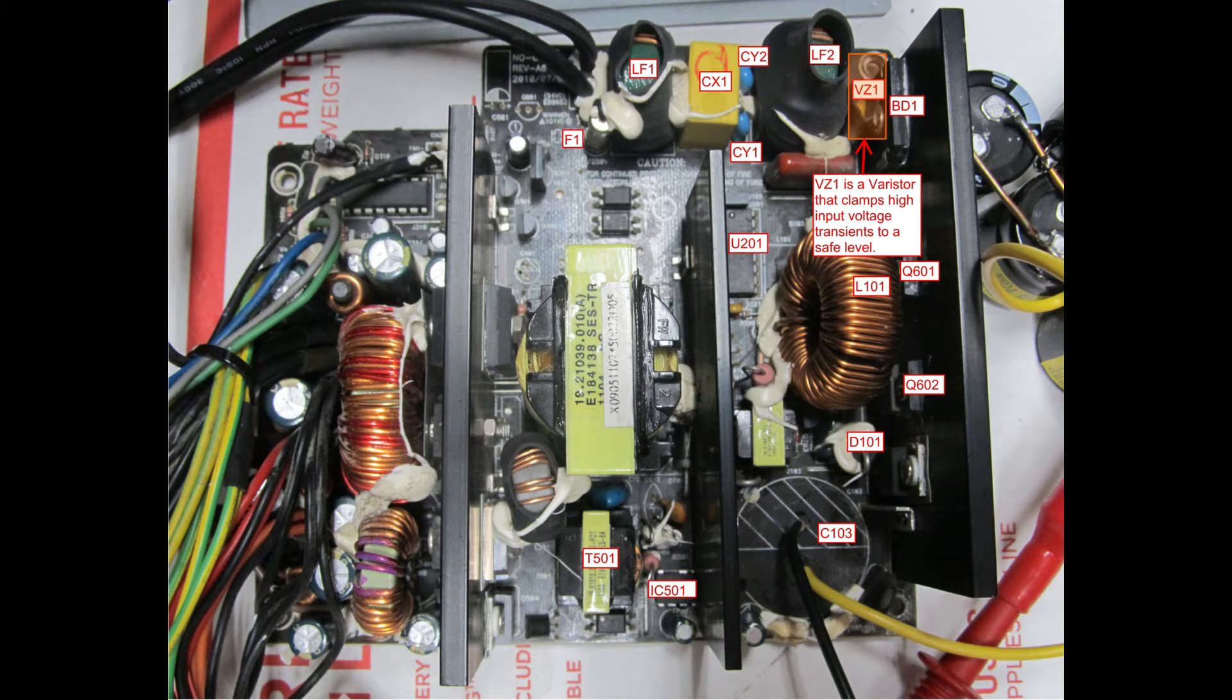As can be seen in this picture, the varistor is located in the top right-hand corner of the circuit board.